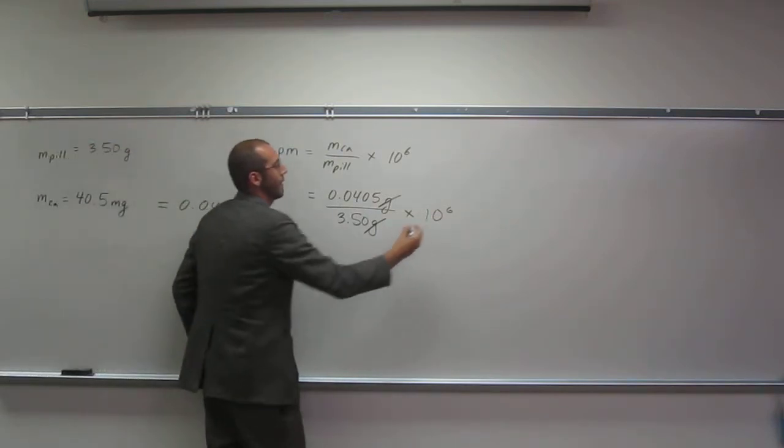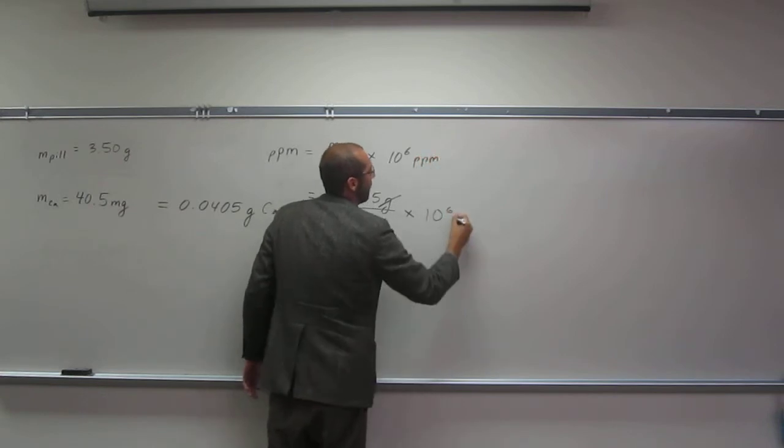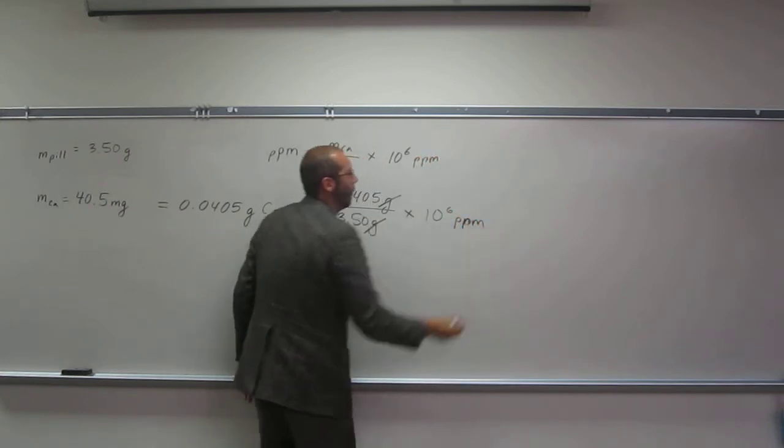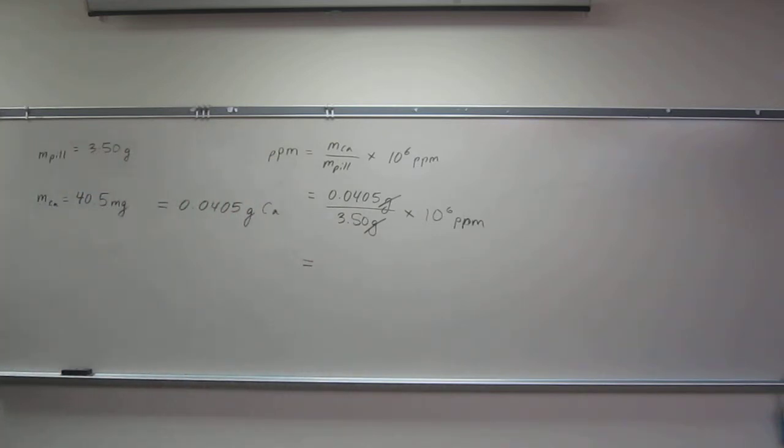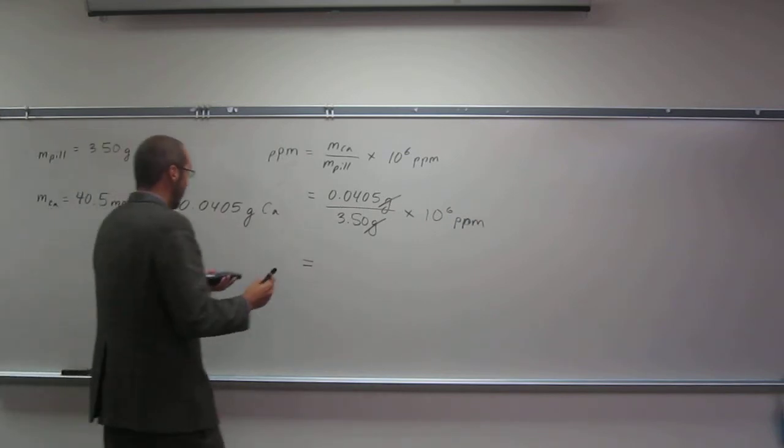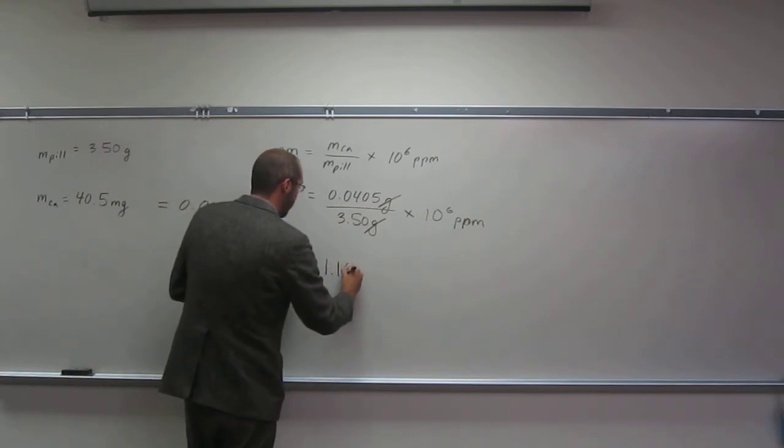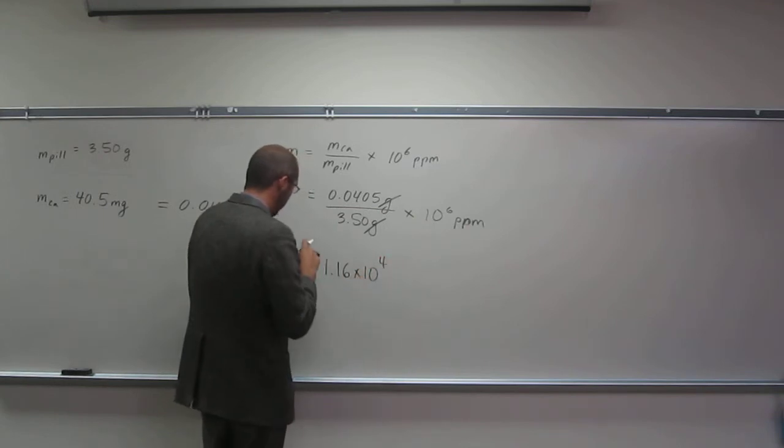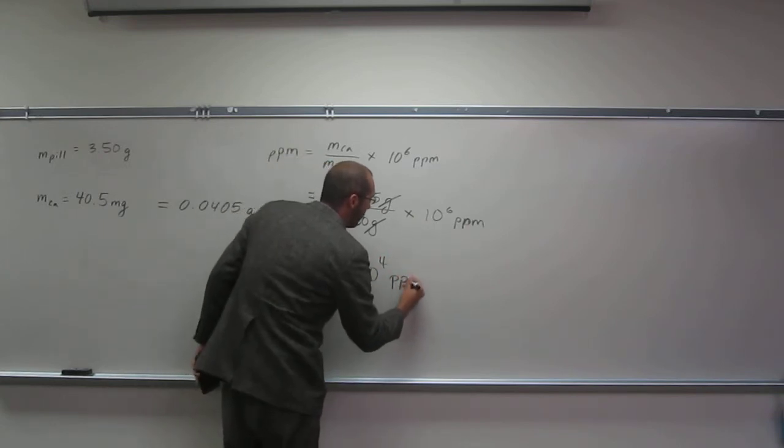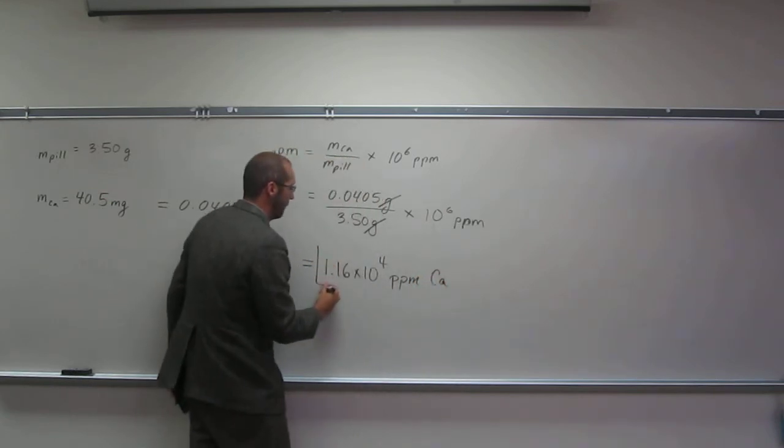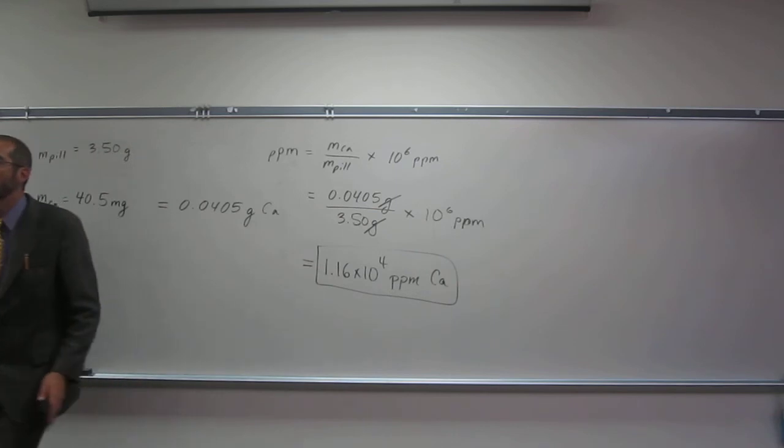What are my units? This is PPM. So let's just plug these stats in. 0.0405 divided by 3.5 times 10 to the 6th. How many sig figs are we going to have here? 3. 1.16 times 10 to the 4th PPM of calcium in the pill.